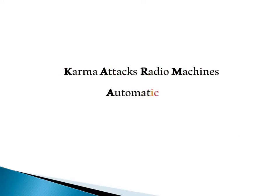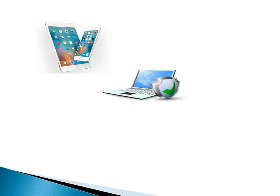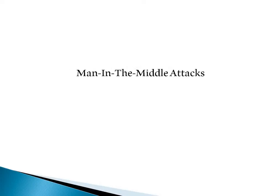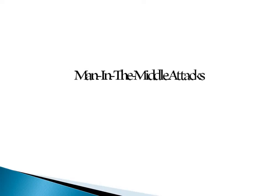Karma stands for Karma Attacks Radio Machines Automatically. A radio machine could simply be a smartphone, tablet, laptop or any wifi enabled device. It is a man-in-the-middle attack where it creates a rogue AP and the attacker could intercept all the traffic passing from the AP.